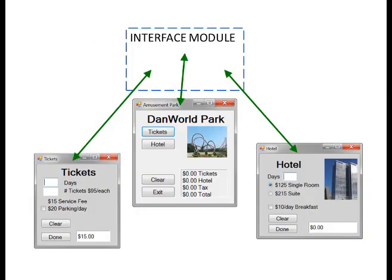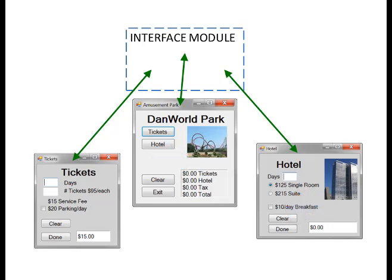The interface module: in addition to the three forms, the project will use a Visual Basic module to communicate between the forms. The module will contain constants, shared data, and a shared function. The module is similar to global data but it can contain constants shared by multiple forms, as well as functions and subroutines. As for pictures, this project has a picture on the main form and on the hotel charges form. The images are supplied on the class page — copy these pictures to your computer and they'll be added to the forms.